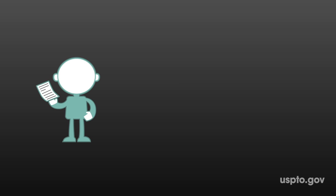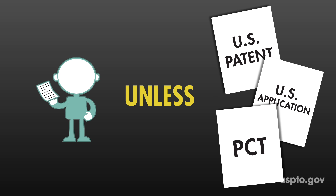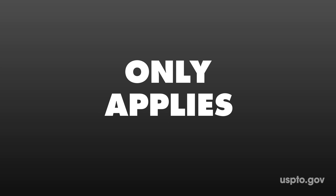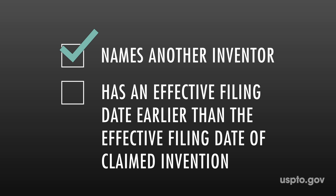So, what does all this mean? Well, an inventor can get a patent unless the claimed invention was published in a U.S. patent, a U.S. application, or a PCT application. Of course, this only applies if the publication names another inventor and has an effective filing date earlier than the effective filing date of the claimed invention.